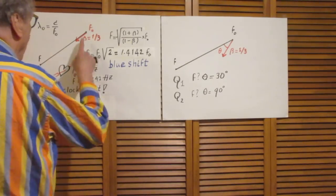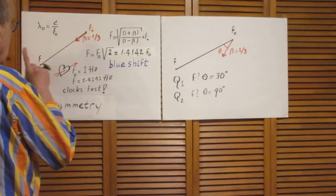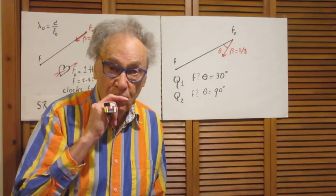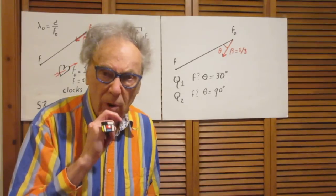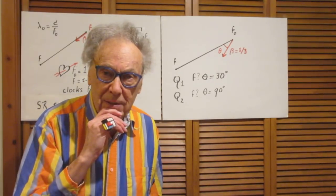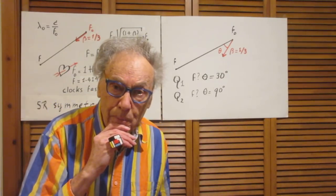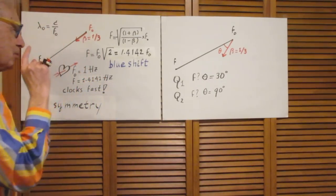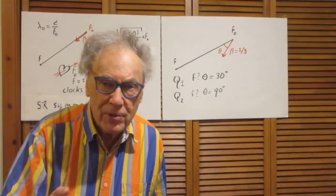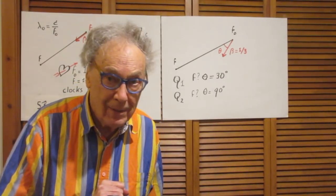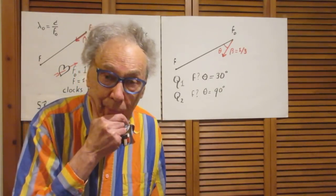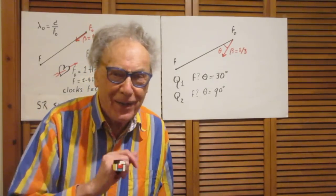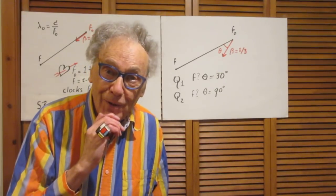If Susan thinks of Walter's heart as being a clock on his planet — namely a ticking clock once every second — she says, hey, this clock is going faster. And by symmetry, if Walter were to look at Susan's heart, he would come to the same conclusion that her heart is beating faster than he knows it should. It's not beating faster because they are emotionally connected — it's because of relativistic Doppler shift.